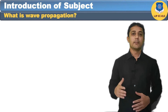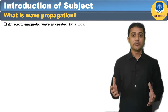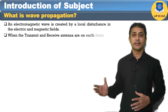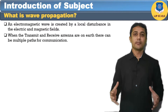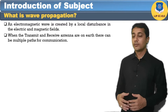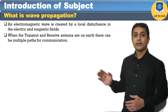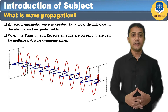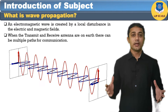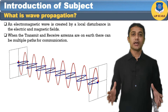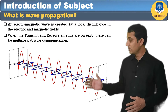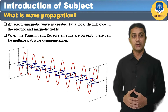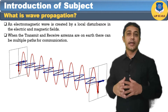We can transmit or propagate the wave using electric and magnetic waves — combined it is known as the electromagnetic wave. From the figure, we can say that the electric field and magnetic field are perpendicular to each other — that means the E and M fields are both at 90 degrees. The red color shows the electric field and the blue color shows the magnetic field.